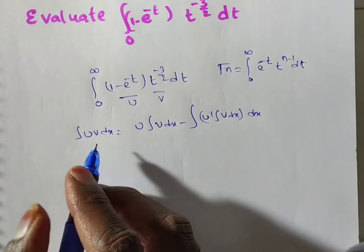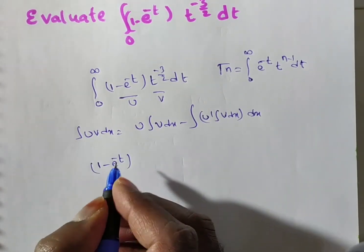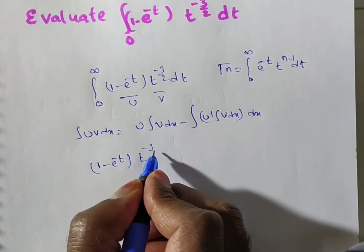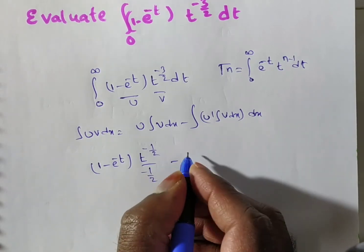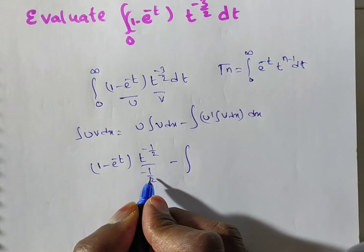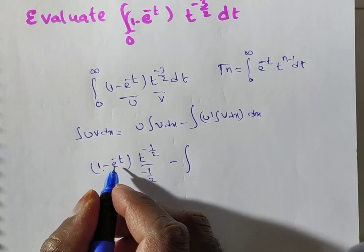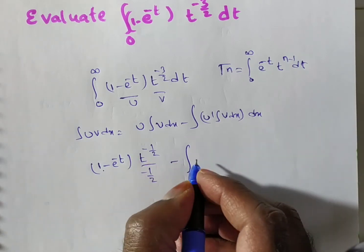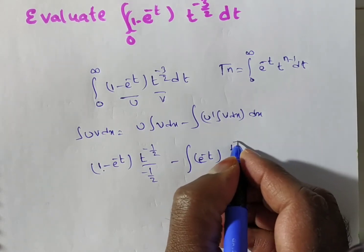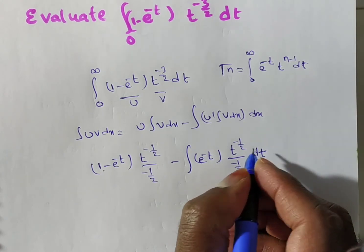So u is (1 minus e to the power minus t) and the integral of v, where v is t to the power minus 3 by 2, gives t to the power (minus 3 by 2 plus 1) divided by (minus 3 by 2 plus 1), which is t to the power minus 1 by 2, divided by minus 1 by 2. The derivative of u: derivative of 1 is 0, and derivative of e to the power minus t is e to the power minus t times minus 1. So u-dash is simply e to the power minus t, and v₁ is t to the power minus 1 by 2 divided by minus 1 by 2.